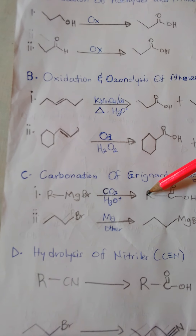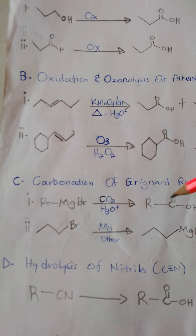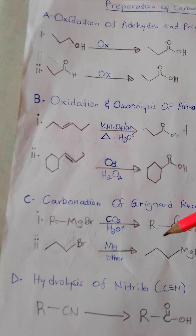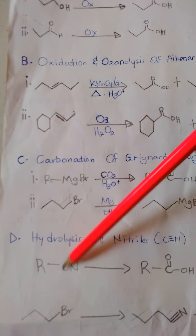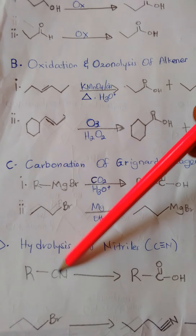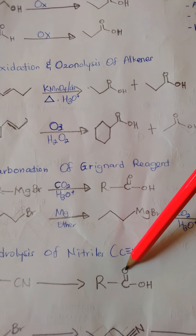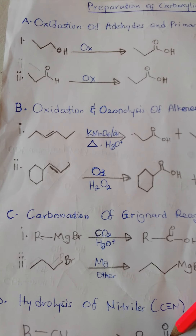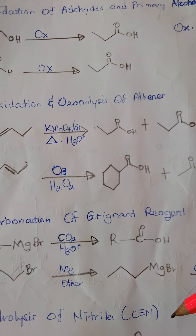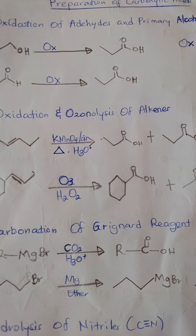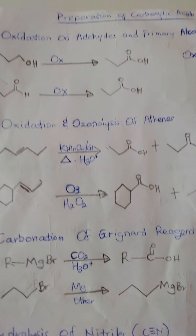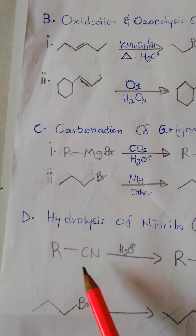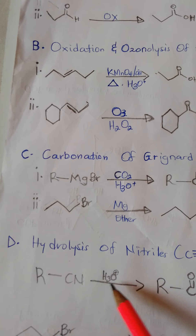The next method is hydrolysis of nitriles. A carbon-nitrogen triple bond is what we call a nitrile; in other contexts they can be called cyanides. When you hydrolyze a nitrile by adding acid hydrolysis, you eliminate the nitrogen and introduce the carboxylic acid functionality. Adding acid hydrolysis to a nitrile converts it to a carboxylic acid.